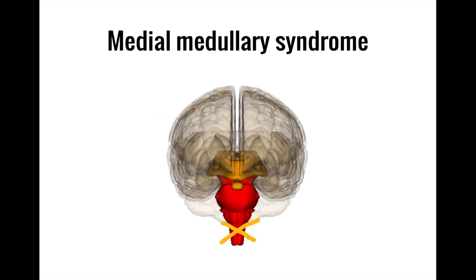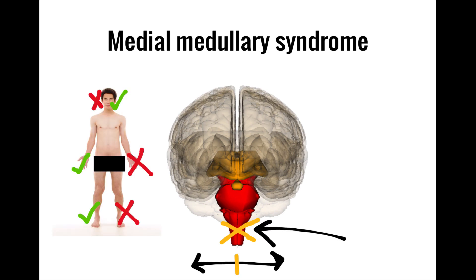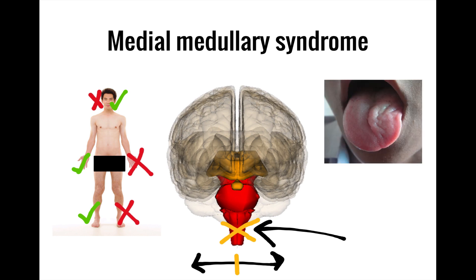As its name suggests, medial medullary syndrome involves a lesion in the medial medulla. This manifests through contralateral hemiparesis of the body but not the face, contralateral loss of epicritic sensation, and ipsilateral tongue weakness. Notably, protopathic sensation is intact.